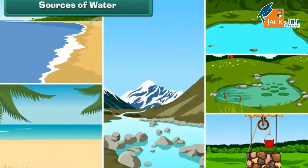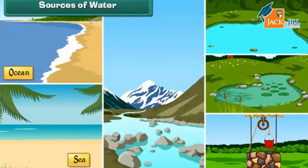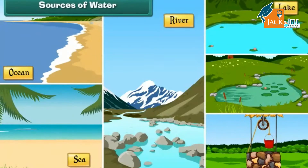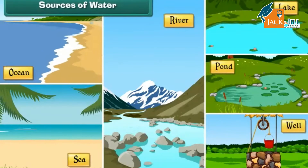Oceans, seas, rivers, lakes, ponds, and wells are the different sources of water on Earth.